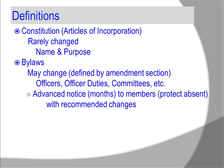The bylaws are usually comprised of advance notice — it could be one to two months advance notice to members. This is to protect the absent. This advance notice often contains recommended changes. When the group meets to potentially change the bylaws, it takes a two-thirds majority vote to make those changes.